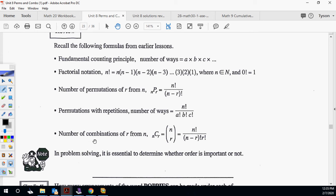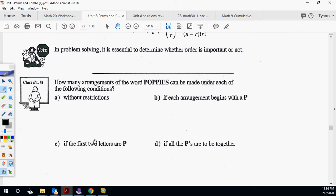We have fundamental counting principles - multiplying number of ways times number of ways. Factorial notation, N factorial is seven times six times five, all the way down to one. Number of permutations, there's your permutations formula. Permutations with repetitions, N over A, B, and C factorial. A, B, and C represent repetitions of letters or colors. Number of combinations - remember combinations is order doesn't matter, so we divide out the R.